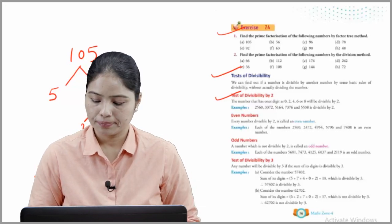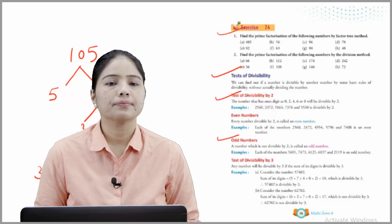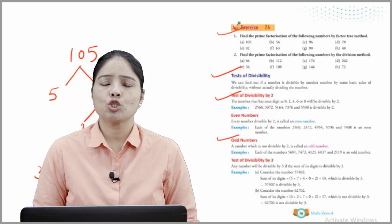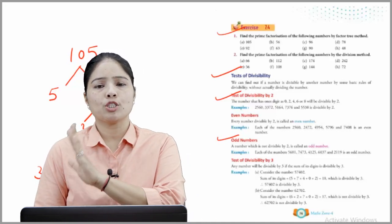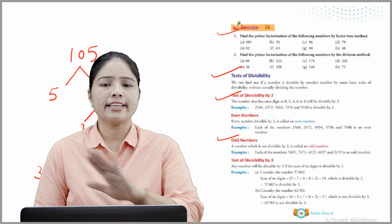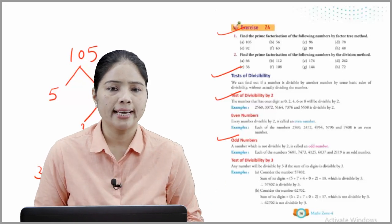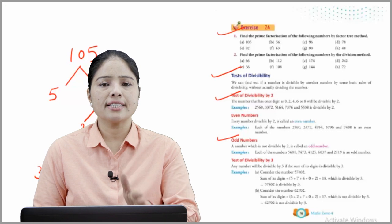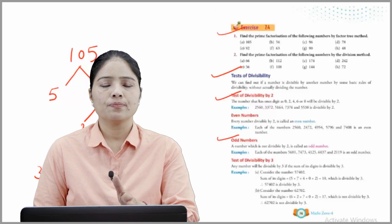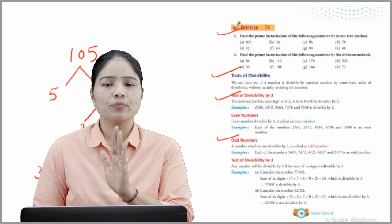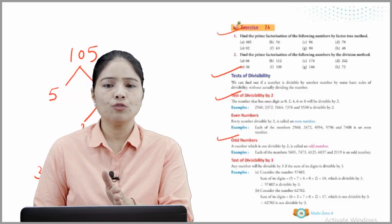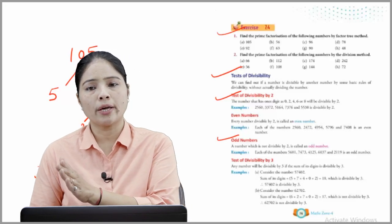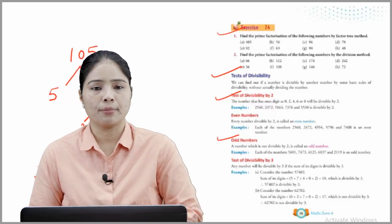Odd numbers: A number which is not divisible by 2 is called an odd number. Examples: each of the numbers 5681, 74734, 125, 603, and 7, 2119 is an odd number.